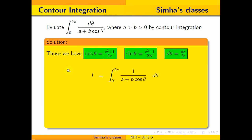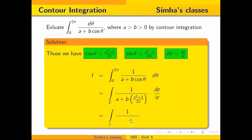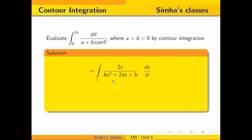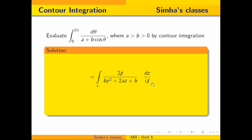Now let us consider our integration and substitute these values. The integrand becomes 1 divided by (a plus b times (z² + 1)/(2z)), multiplied by dz/(iz). Taking the LCM gives (2az + bz² + b)/(2z), and after canceling 2z, I find the coefficient of z² to identify the quadratic. Taking b outside, I will get the simplified complex integration form.